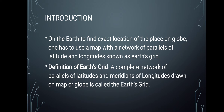What do we mean by earth grid? A complete network of parallels of latitudes and meridians of longitude drawn on the map or globe is called the earth grid. The network formed by latitudes and longitudes is basically called the grid.